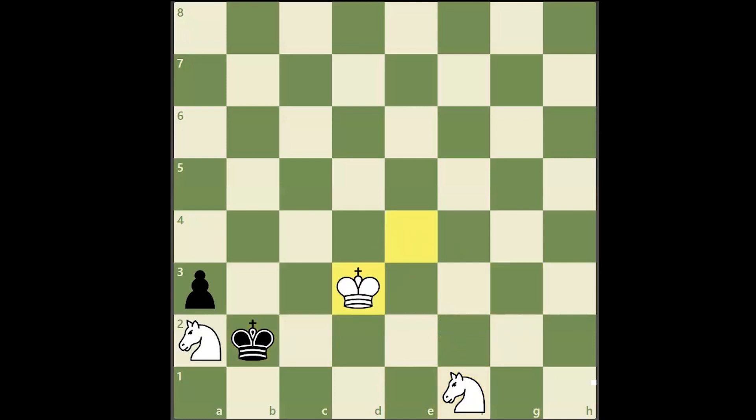Here, if black takes the knight white has a checkmate in twelve moves which will be left as an exercise to the viewer.